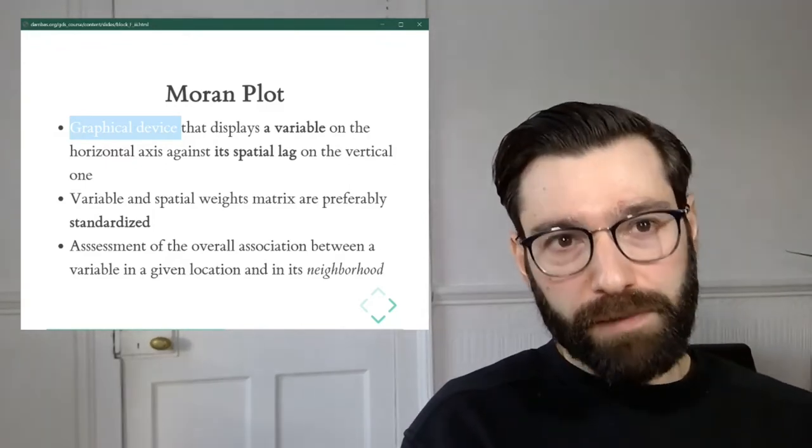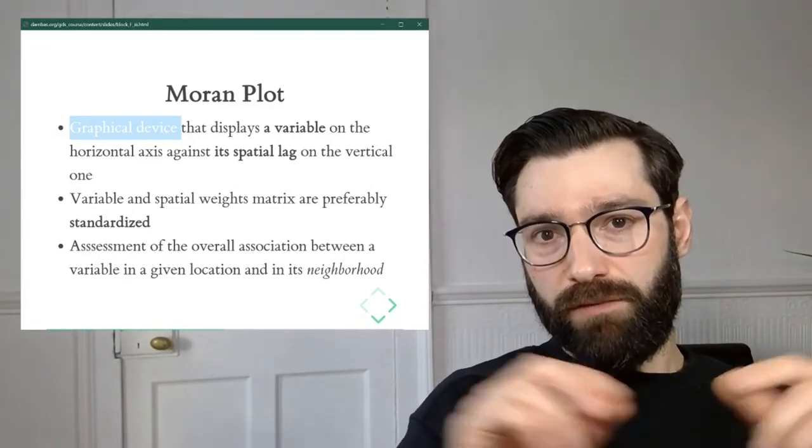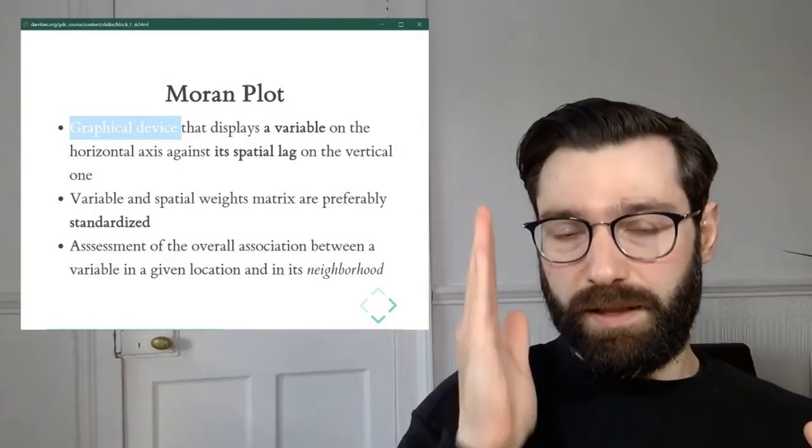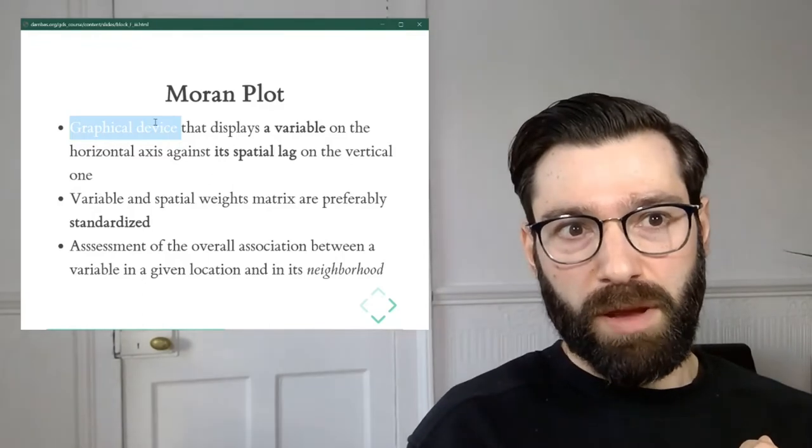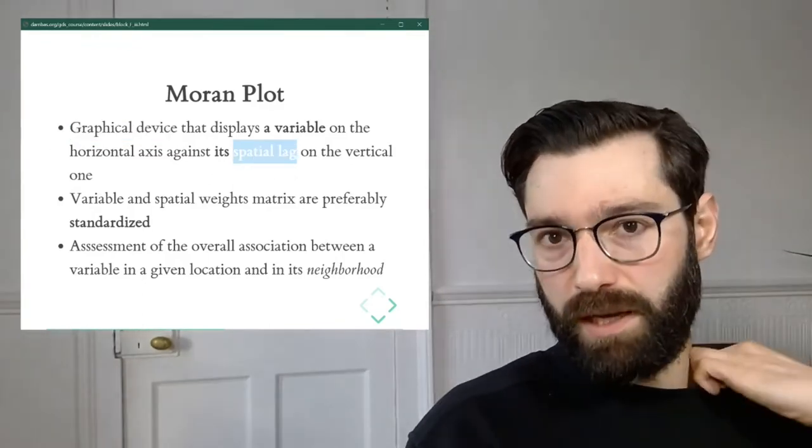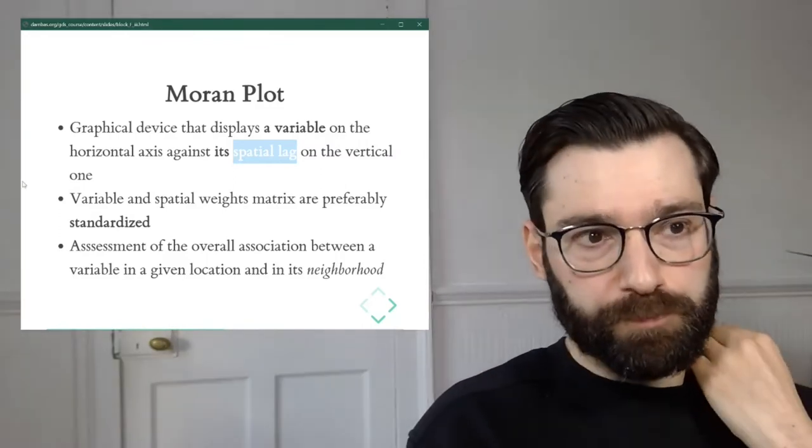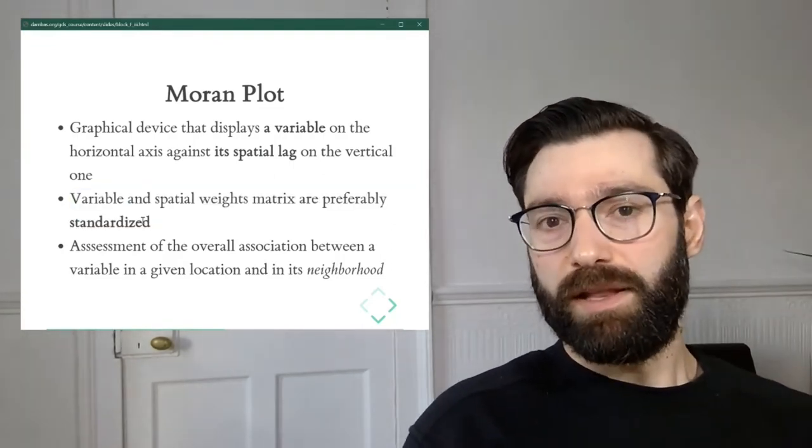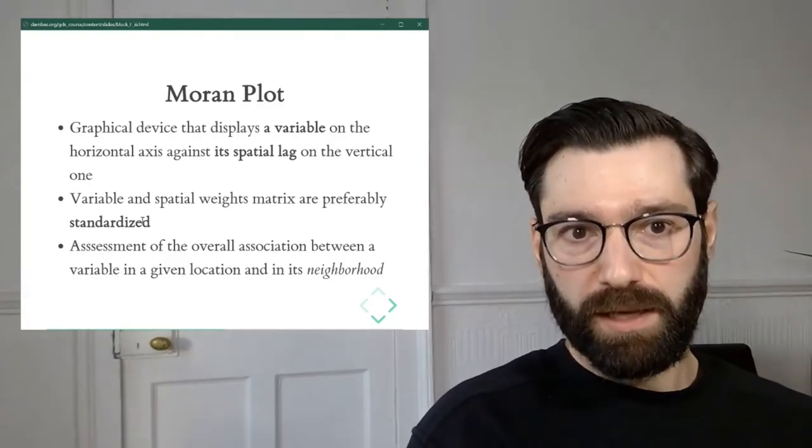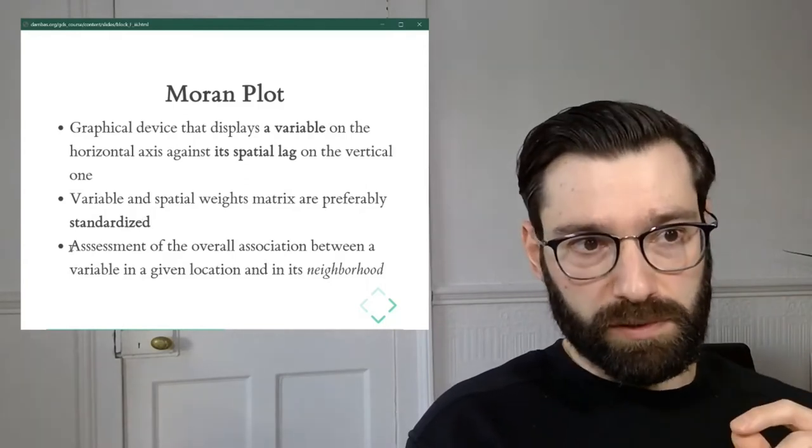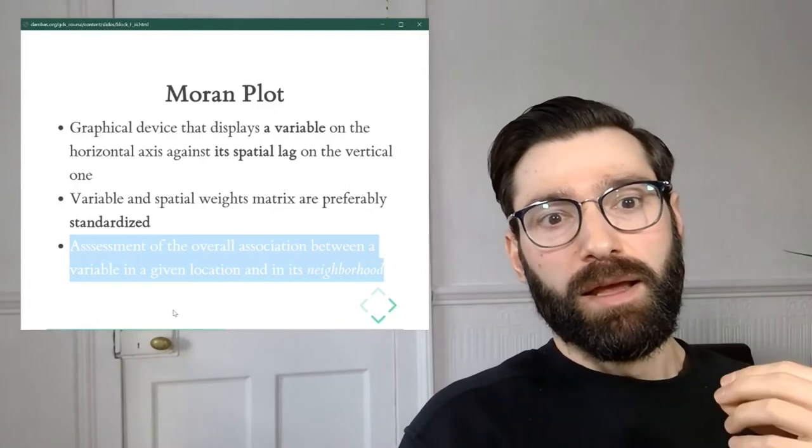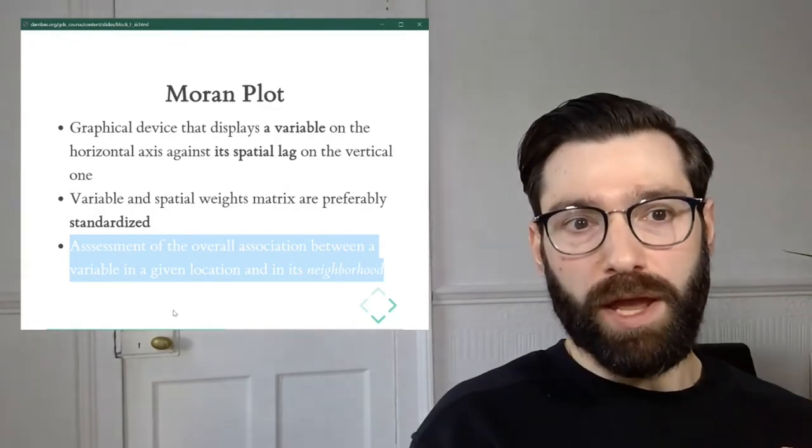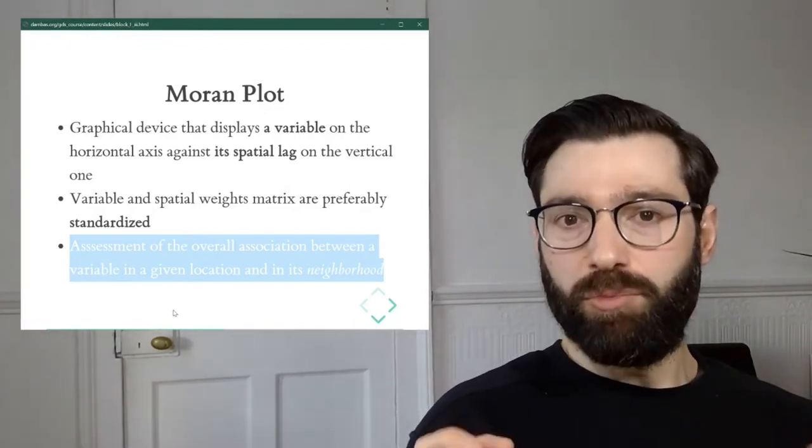The Moran plot is a graphical device that displays the values of a given variable in the horizontal axis against the values of the spatial lag of that variable in the vertical axis. Remember, we also saw the meaning of the spatial lag in a previous clip. By doing this, usually you would expect that both the variable and the spatial lag are standardized, but that is not crucial.